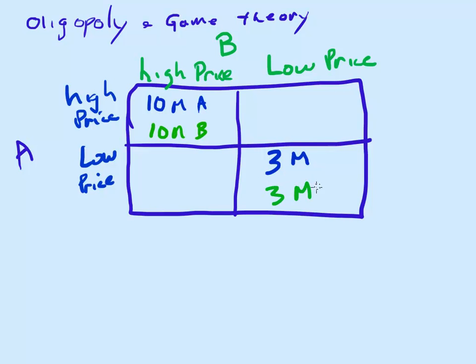If A has a high price and B has a low price, B can steal customers away from A. In this case, A with a high price would earn let's say 1 million, and B would earn 15 million. Let's flip it around down here. B has a high price, A has a low price - that's 1 million for B and 15 million dollar profit for A.